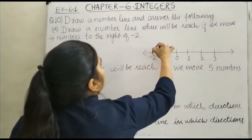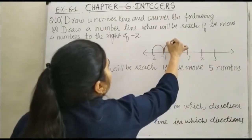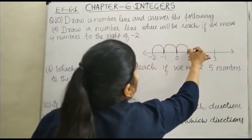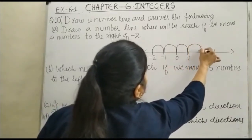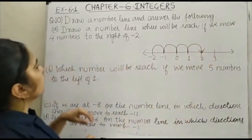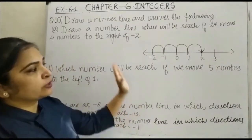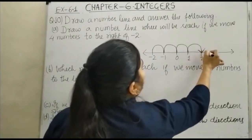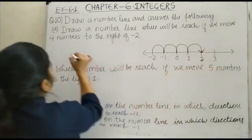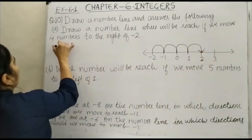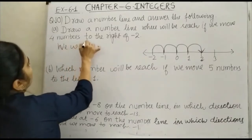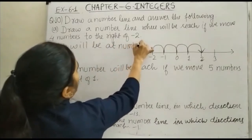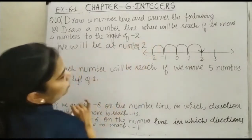So this is your 1st number, this is your 2nd number, 3rd number, and this is your 4th number. So you can see that when we move 4 numbers to the right of minus 2, we reach number 2. So we will be at number 2.